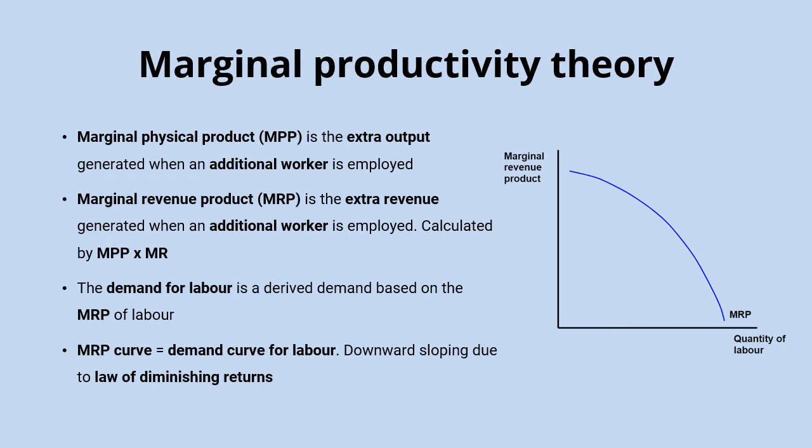As we add more and more labour to those fixed inputs, the additional output that's added will start to diminish. It takes a concave shape away from the origin because these diminishing marginal returns will accelerate as we continue adding more and more labour to those fixed inputs.